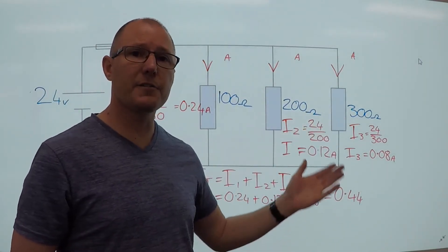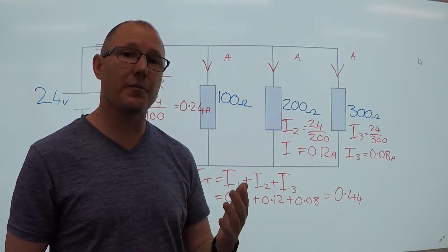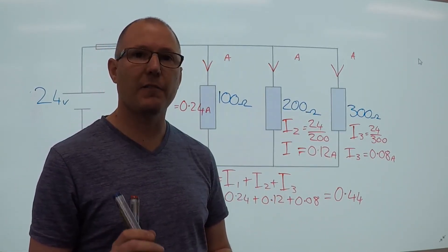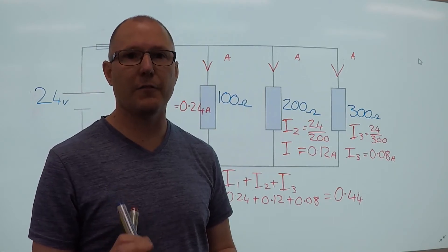Next one is 300, so it's 24 divided by 300, that's a current of 0.08 of an amp.